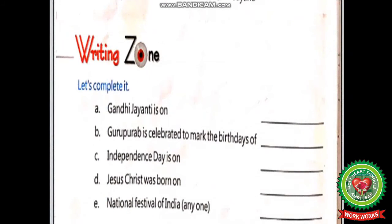Now students, open page number 62 of your social studies book, Writing Zone. Let's complete it. A: Gandhi Jayanti is on dash. B: Guru Poorabh is celebrated to mark the birthdays of dash. C: Independence Day is on dash. D: Jesus Christ was born on dash. E: National Festival of India — anyone dash. We have discussed five national festivals; you have to write any one national festival here. Complete these lines by filling the correct answers in the given blanks.